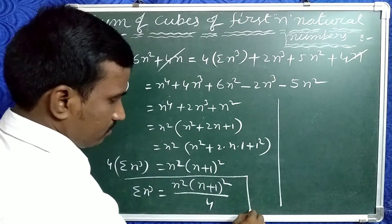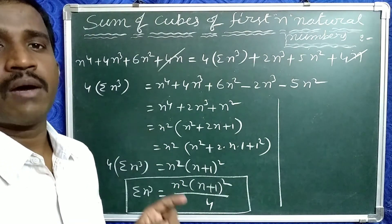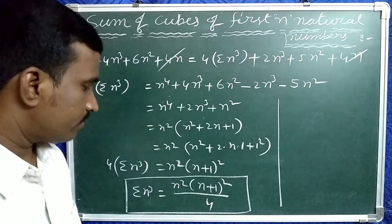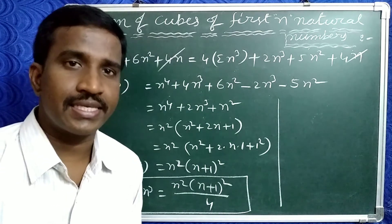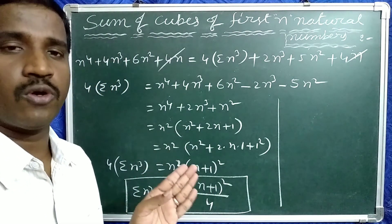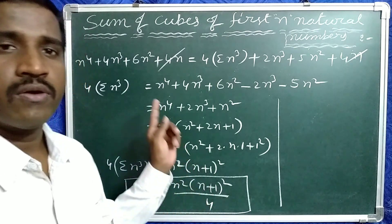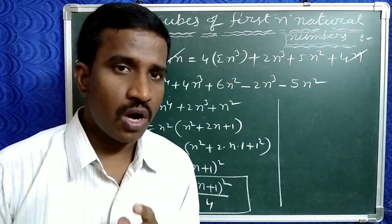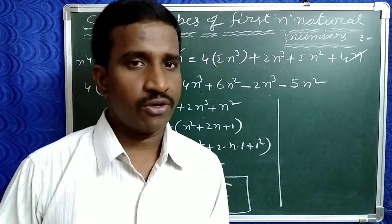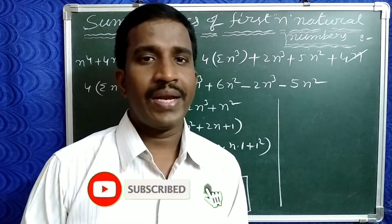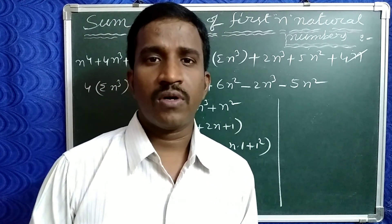So the formula for sigma n cube — the sum of the cubes of first n natural numbers — is n squared into n plus 1 whole squared by 4. This is the proof of sigma n cube. Please like it and share it with your friends. If you are new to our channel, please subscribe and click on the bell icon so you get notifications when videos are uploaded. Thank you!